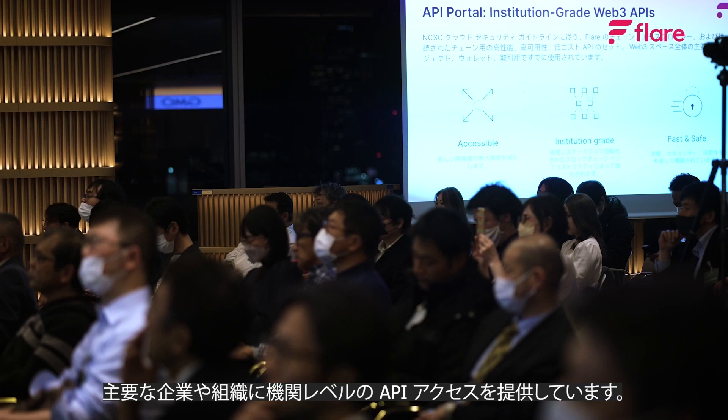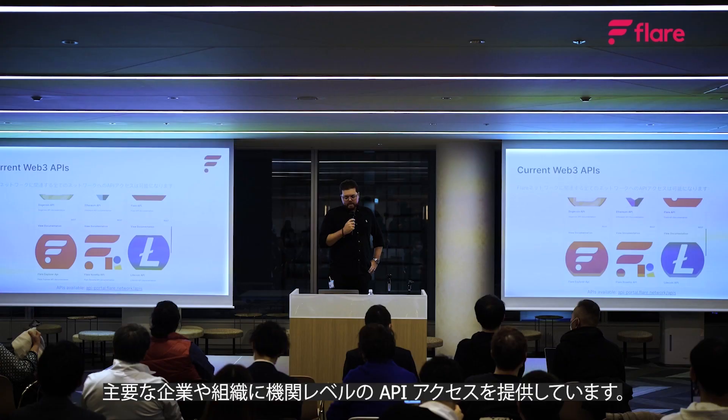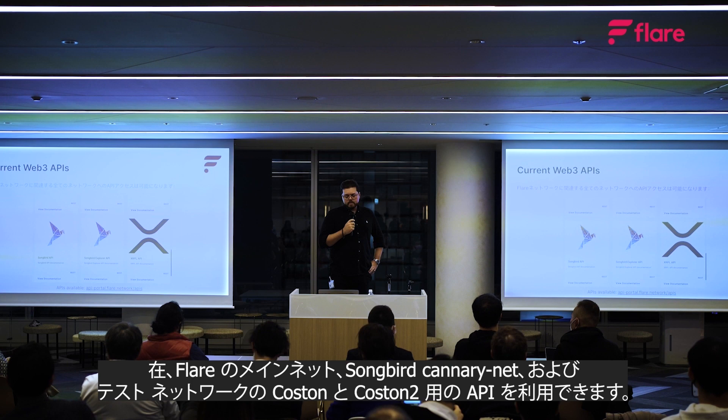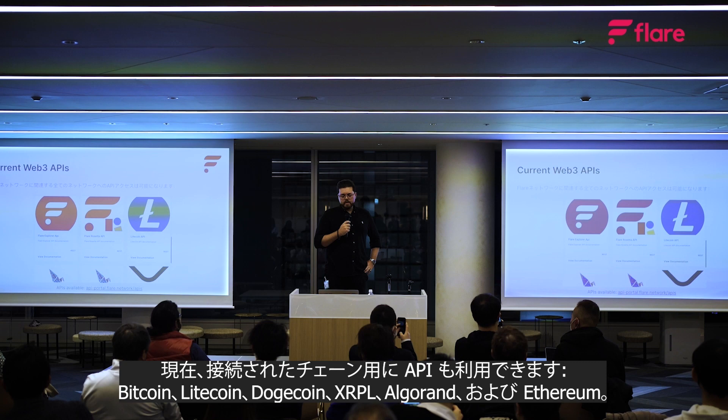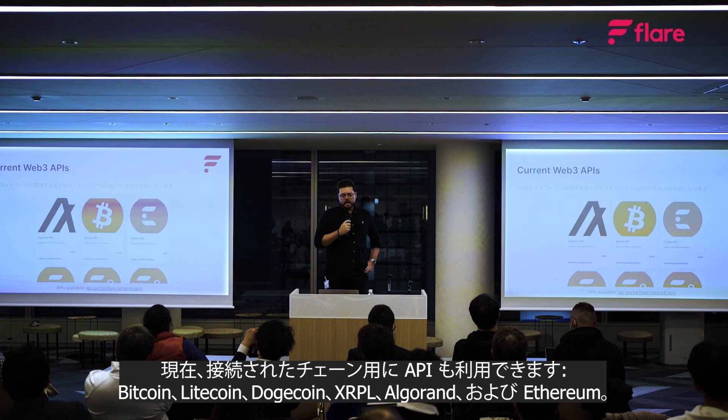We currently have APIs available for Flare's mainnet, the Songbird Canary Net, and our test networks Coston and Coston 2. We also have APIs available for our connected chains, currently Bitcoin, Litecoin, Dogecoin, XRPL, Algorand, and Ethereum.